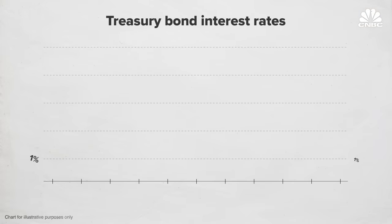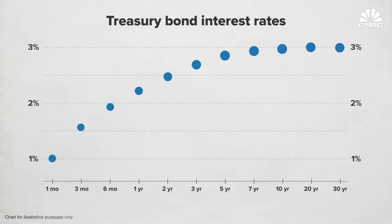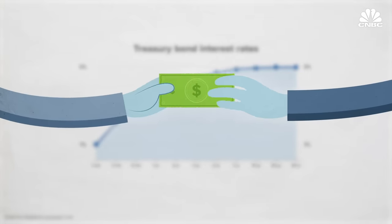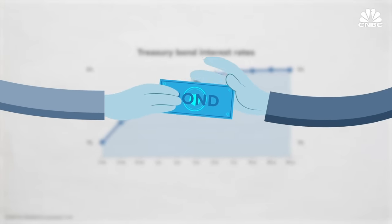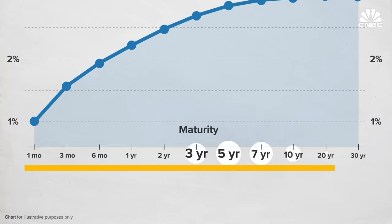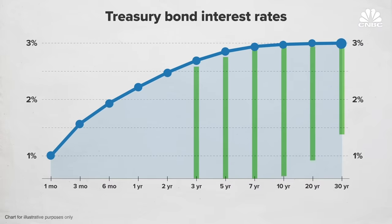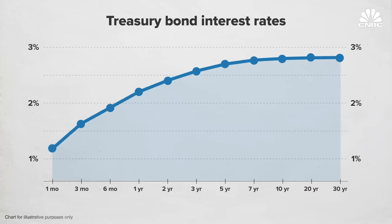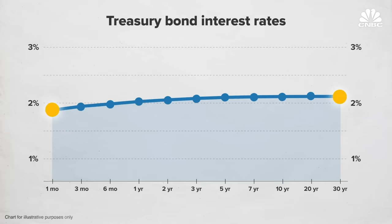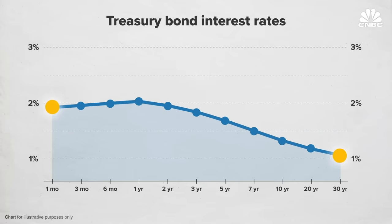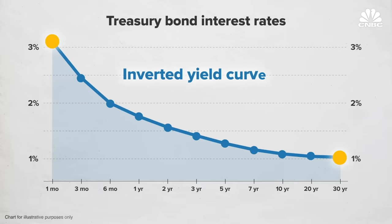The yield curve is just a graph showing the relationship between short-term and long-term interest rates of U.S. Treasury notes. Usually the short-term rate is lower than the long-term one. But if you are lending money to the federal government — which is essentially what happens when you buy a Treasury note — you are taking a bigger risk by letting the government have your money for a longer period of time, so you're going to want a higher interest rate to compensate. But sometimes this relationship changes. If the two rates start getting closer together, that's called a flattening yield curve. If the long-term rate dips below the short-term rate, that's what we call an inverted yield curve.